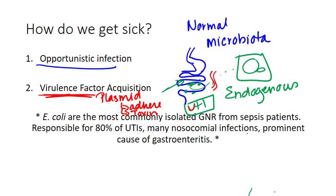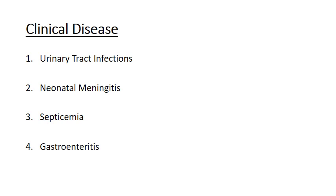E. coli are a really important organism to know. They are the most commonly isolated organism from septic patients — a big cause of sepsis. They're responsible for 80% of UTIs, many nosocomial infections, and are a really prominent cause of gastroenteritis. With the exception of neonatal meningitis and gastroenteritis, E. coli infections are almost always endogenous.